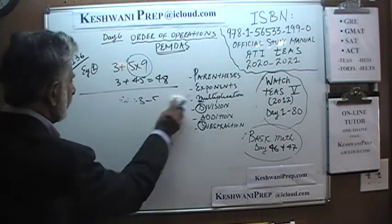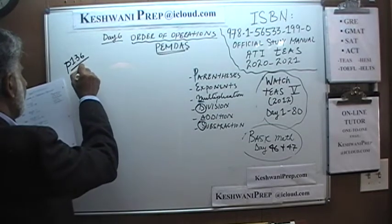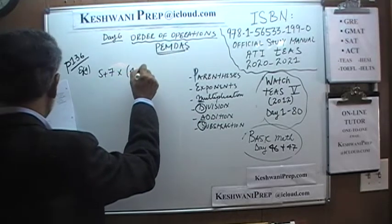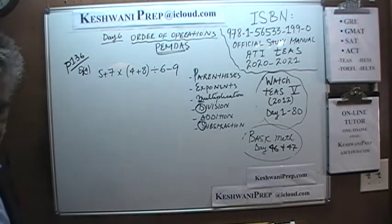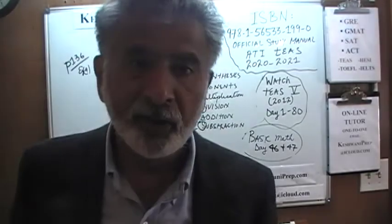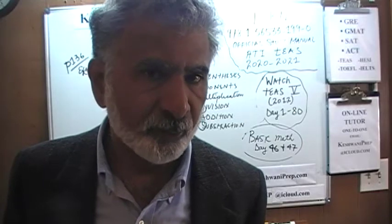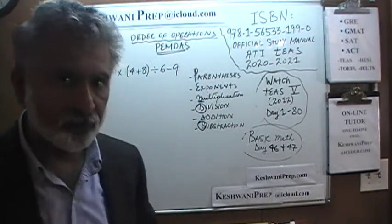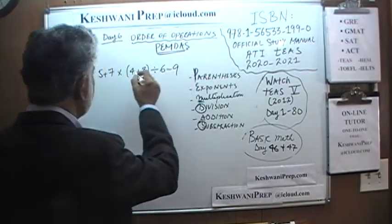Let's do example number 4: 5 plus 7 times, then in parentheses 4 plus 8, divided by 6 minus 9. The simplest, easiest, and most assured way is to always go step by step. Don't try to skip steps or do two steps together — that's where the potential lies for making an error, or what is known in the world of mathematics as boo-boos. We don't want boo-boos. First the parentheses.